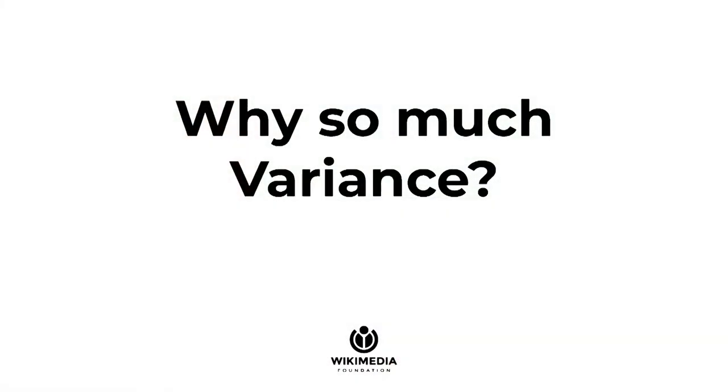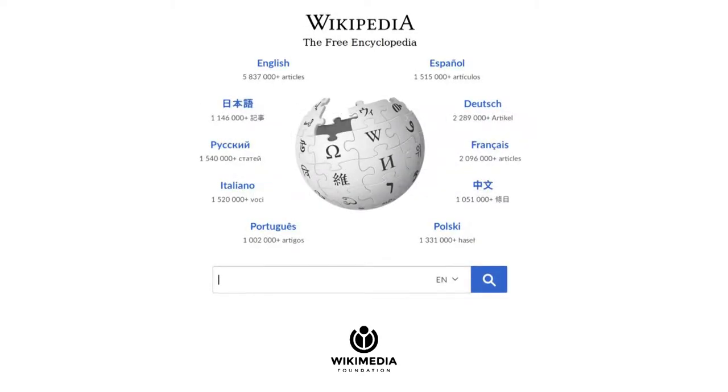So why is there so much variance in search? If you've run A-B tests for other things — like changing the color of a button — you don't see this kind of variance. For search, the answer is that box where users can type anything they want. There are so many opportunities for them to do very different things. Because all users are doing different things, when you're doing a traditional A-B test where one user gets ranker A and a different user gets ranker B, the variance of what they're doing falls through into your tests, giving you very high variance in your metrics as well.